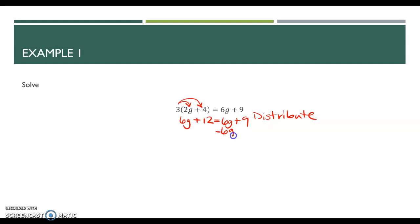So to move it across the equal sign, it has to change signs. And so we're going to subtract 6g from both sides. And what happens is this 6g goes away and this 6g goes away. So we're left with 12 equals 9. There are no more g's. G went away. And so then right here, I know 12 does not equal 9. So this does not make sense. And because it does not make sense, that means there is no solution.